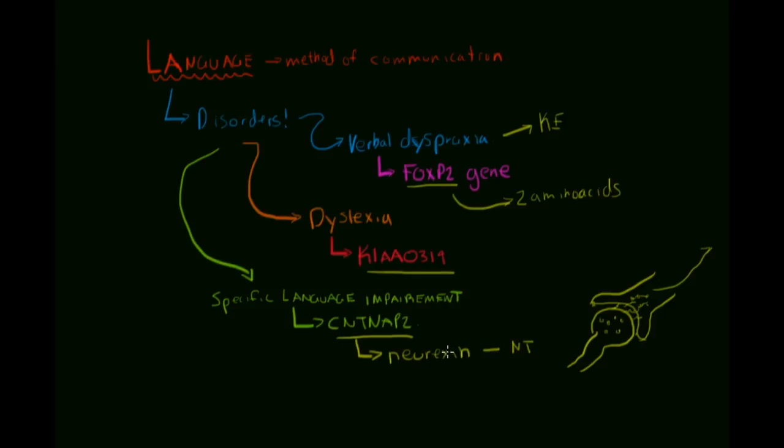And the KIA0319 protein is thought to be critical for neuronal migration during neocortical development, as well as normal function of adult neurons. So, this one's often mutated in dyslexia, which is a pretty common, commonly heard of language deficit. About 5% to 10% of people have it in the world, and it's usually more commonly linked to females.